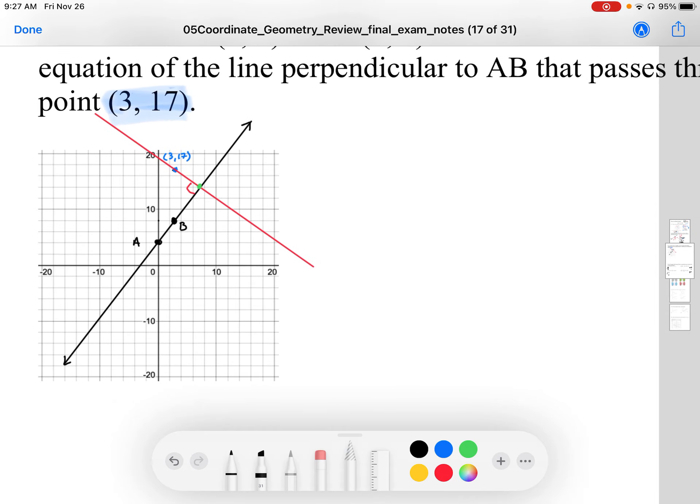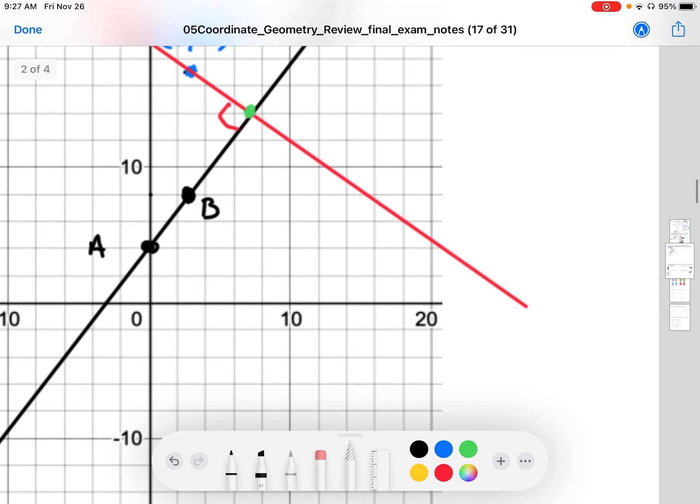So all we're left with is figuring out the slope of the red line. Well, the slope of the red line can be determined from the slope of the black line, because the relationship of a line and its perpendicular slope is a negative reciprocal slope. So the black line and the red line will have negative reciprocal slopes to each other.